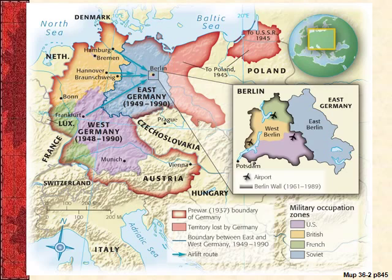This map shows the different occupation zones of Germany and then Berlin itself. The reason Yalta was such a bad deal for the United States is that the Soviet Union was just one of four military powers at the conference, yet basically got half of everything. What's fair would have been 25 percent.